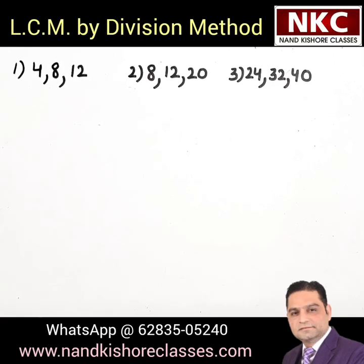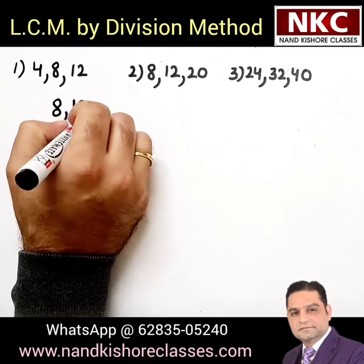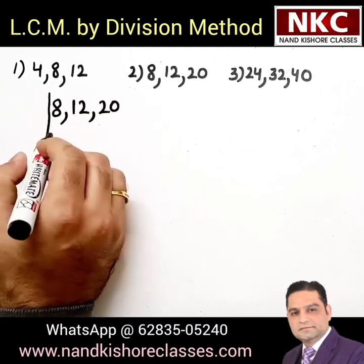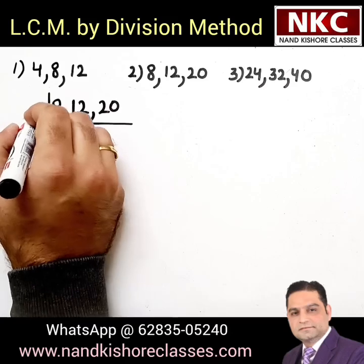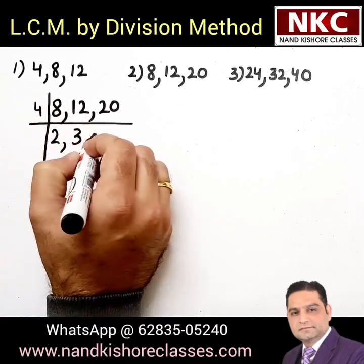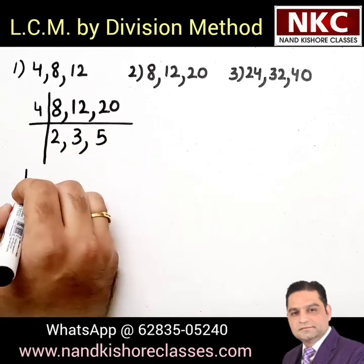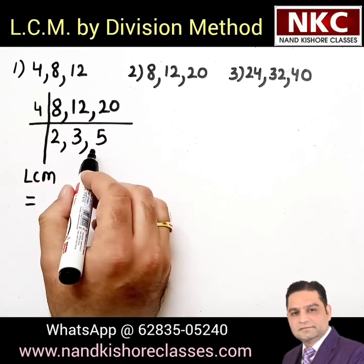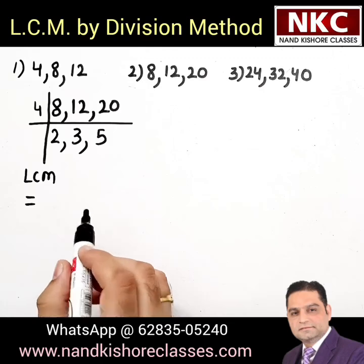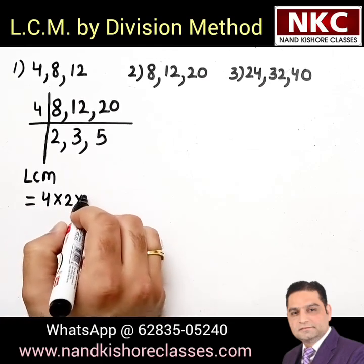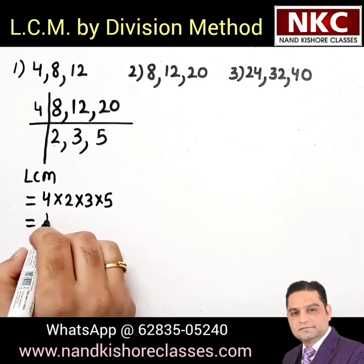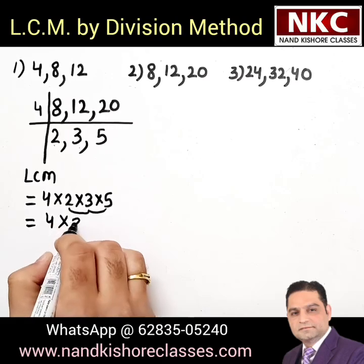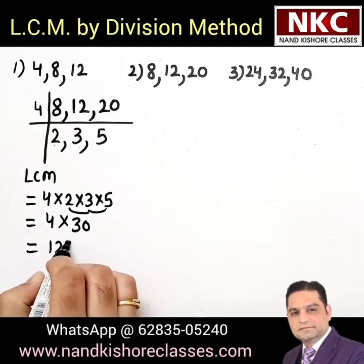Second question: 8, 12 and 20. You need to find a common divisor — they are all divisible by 4, so I can start with 4. 4 times 2 is 8, 4 times 3 is 12, 4 times 5 is 20. Now 2, 3 and 5 have no common divisor and not even two of them share one, so stop here. Your LCM is 4 times 2 times 3 times 5. 5 times 3 is 15, 15 times 2 is 30, so LCM is 120.